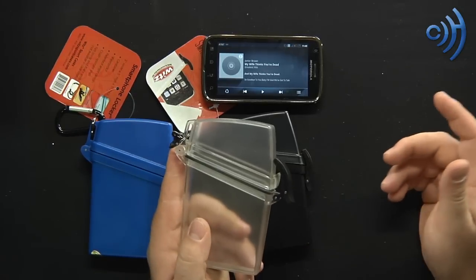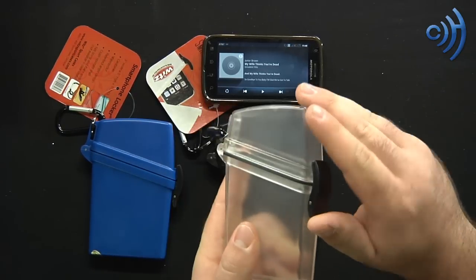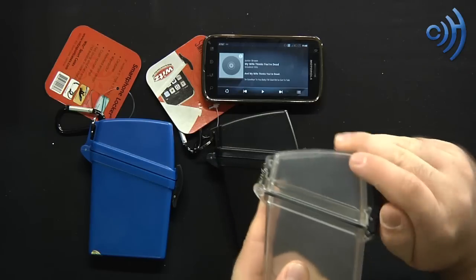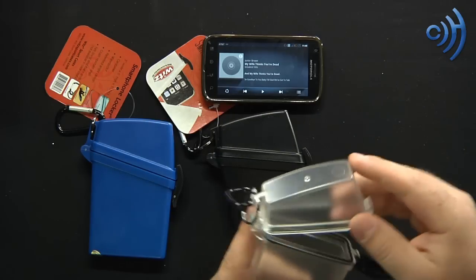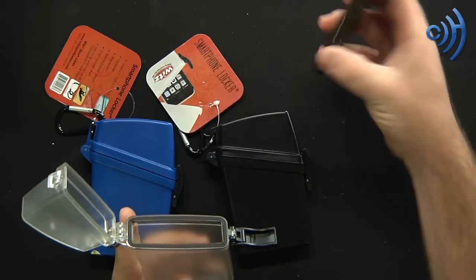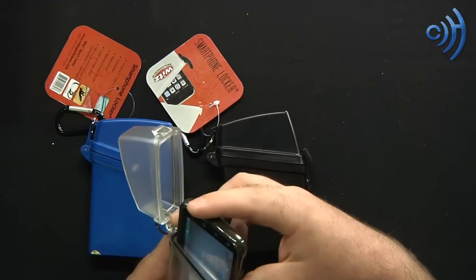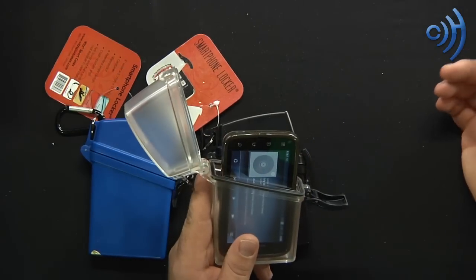Let me go ahead and demonstrate that here. Very simple. As you can see, simple pop. Pop that open. Hinges open here. Take your Smartphone, you set it inside. This is the Motorola Atrix with a 4-inch touchscreen.